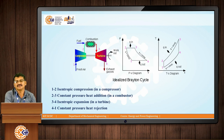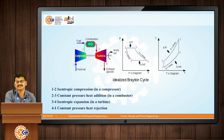First, fresh air is taken from the outside environment into the compressor. It is compressed to a particular pressure and then it is entered into the combustion chamber. In the combustion chamber, fuel is added, the air-fuel ratio is maintained, burning takes place, and then this gas enters the turbine.